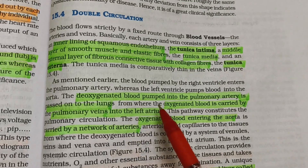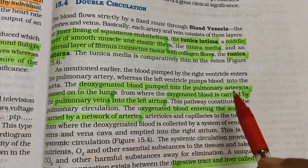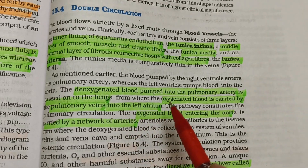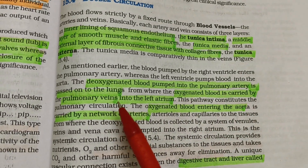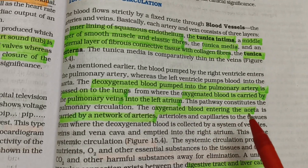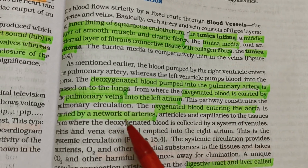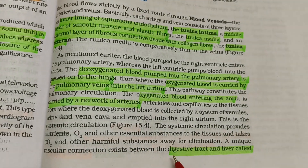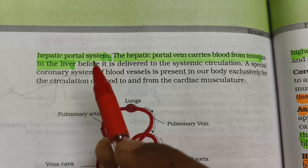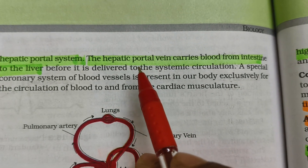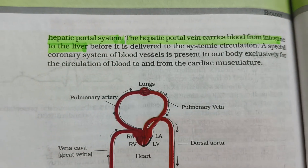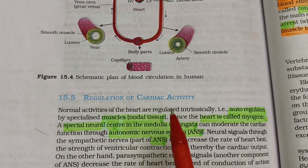In double circulation, deoxygenated blood is pumped into the pulmonary arteries and passed to the lungs, while oxygenated blood is carried by the pulmonary veins to the left atrium. Oxygenated blood entering the aorta is distributed through a network of arteries. The hepatic portal system includes the hepatic portal vein, which carries blood from the intestine to the liver.